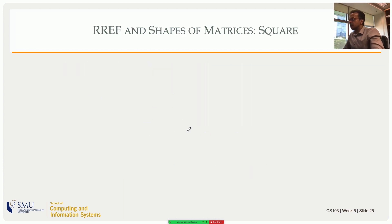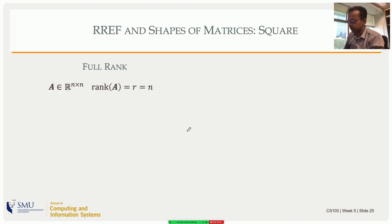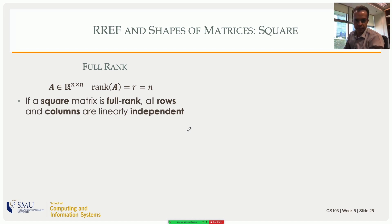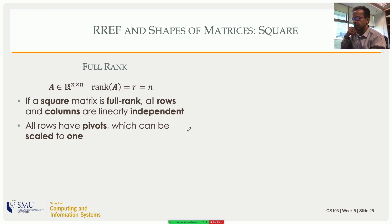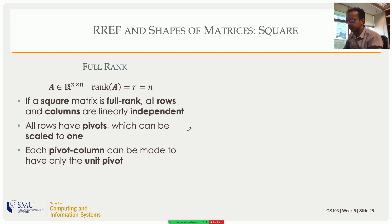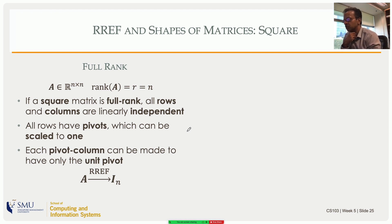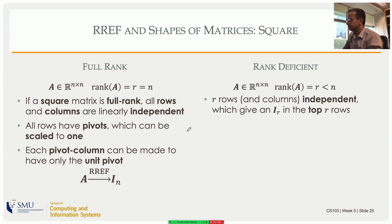For a full-rank square matrix, the rank equals the number of rows and columns, all rows and columns are linearly independent, and all rows will have pivots. After scaling to make pivots one and eliminating elements above each pivot, the coefficient part always reduces to the identity matrix. For a rank-deficient square matrix (rank r < n), only r rows and columns are independent, giving r non-zero pivot rows at the top of the RREF.